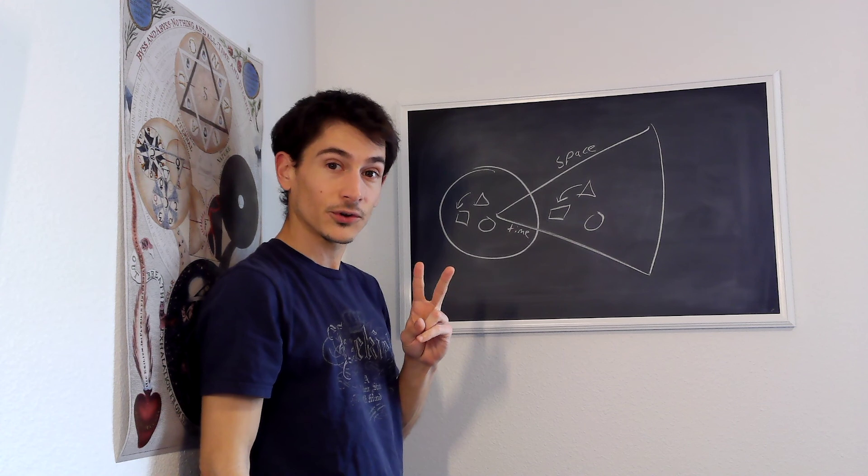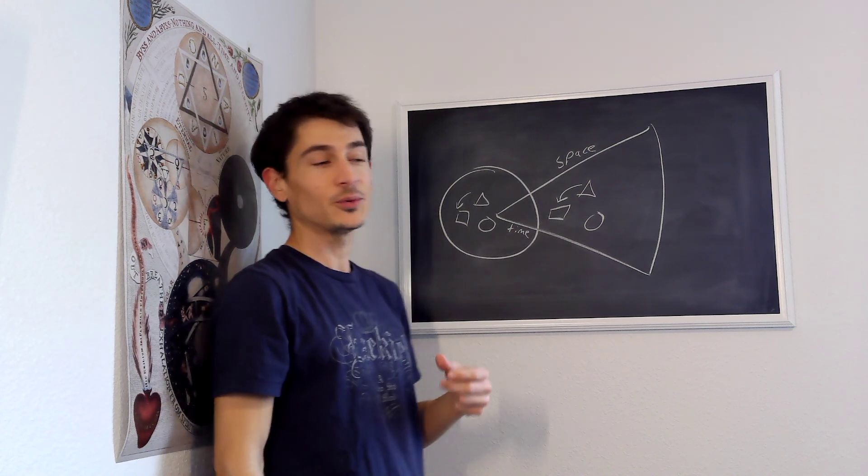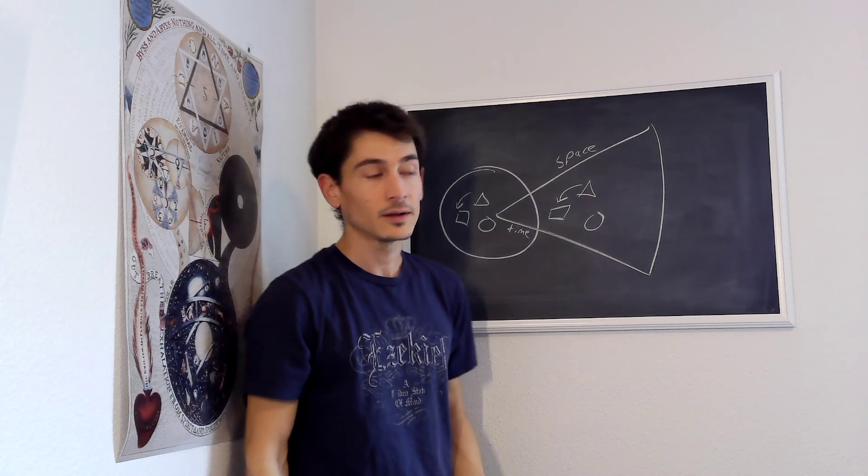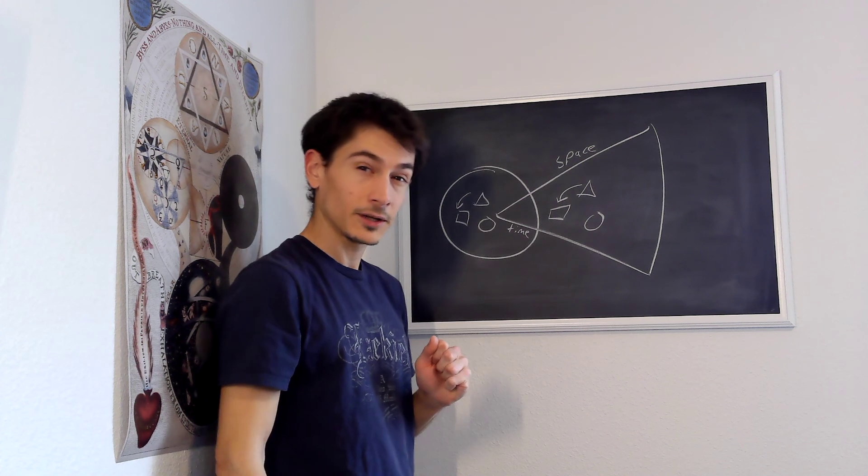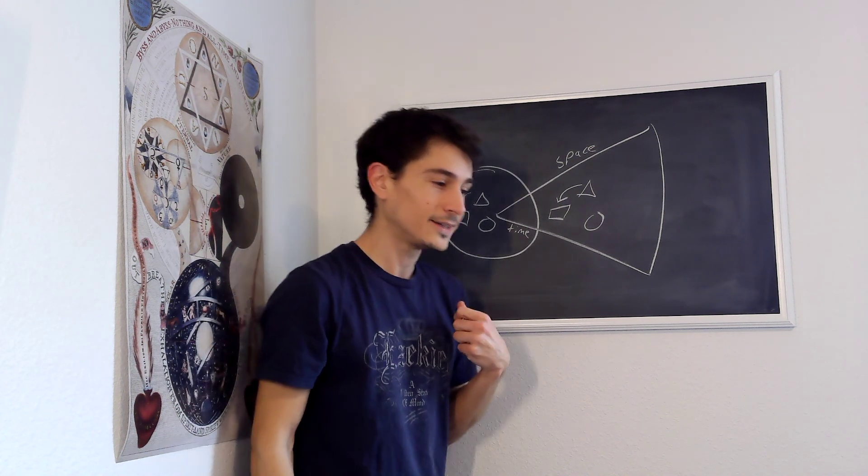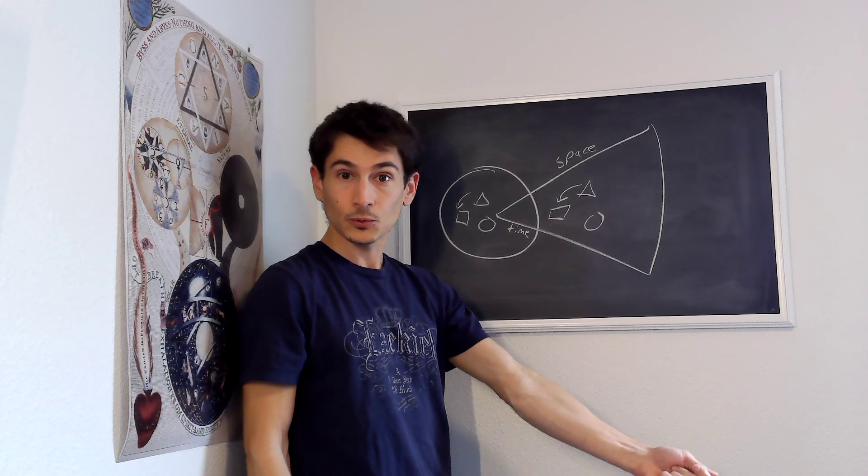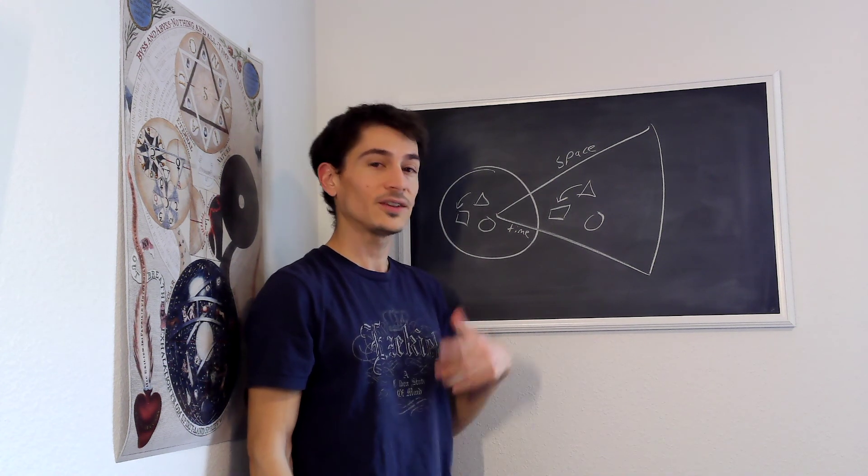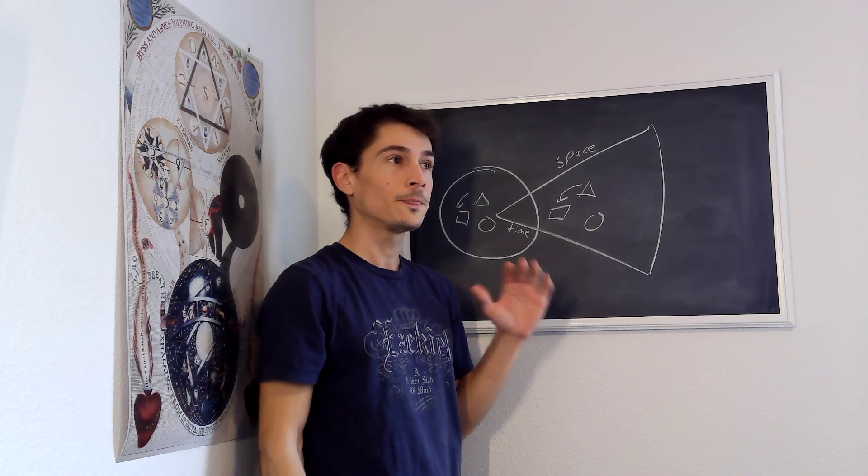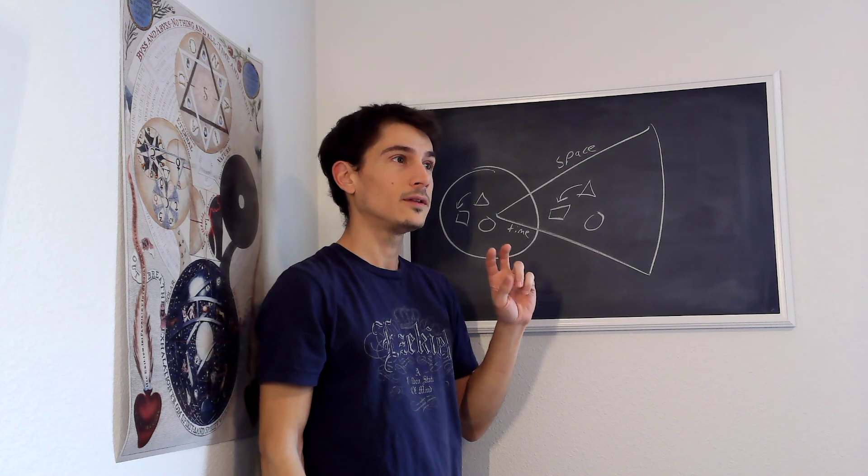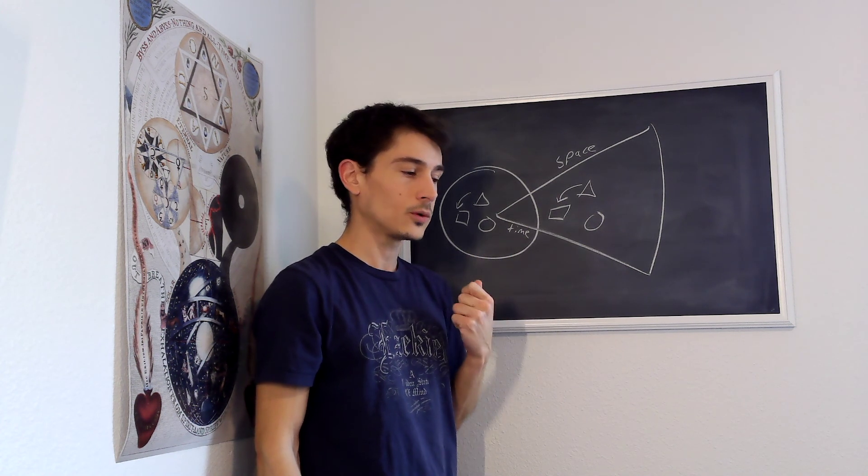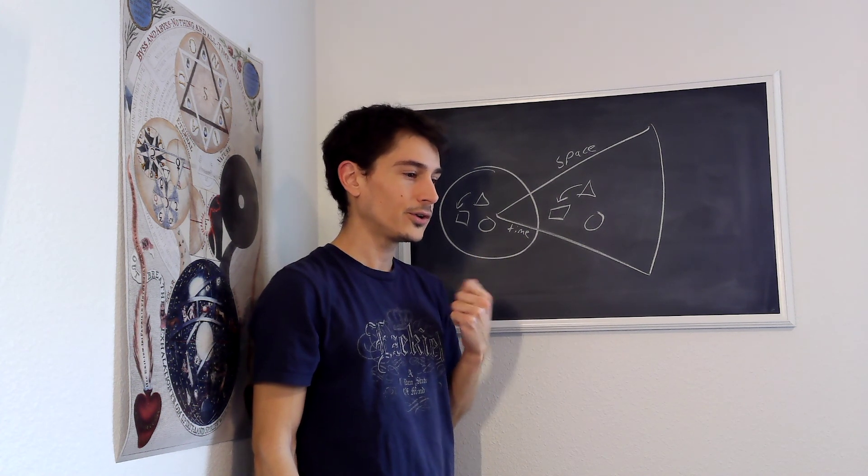He has two more critiques: the Critique of Practical Reason which has to do with morality, and the Critique of Judgment which has to do with teleological judgments of purpose in the biological realm of organisms as well as aesthetic judgments of art. In the second lecture supplement we talked mostly about the Critique of Judgment.